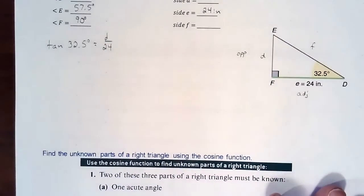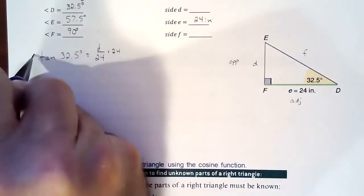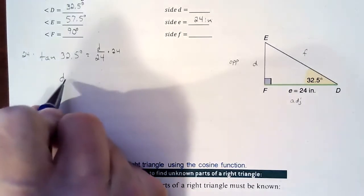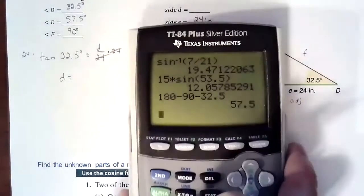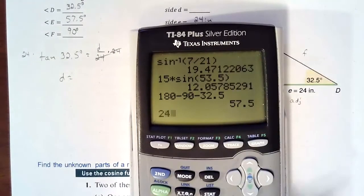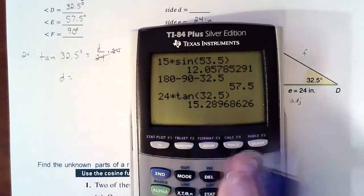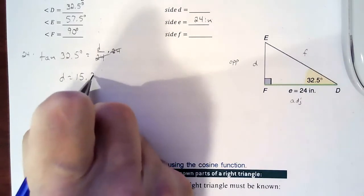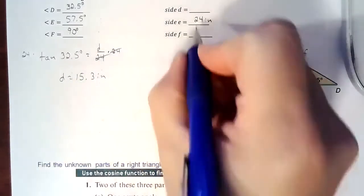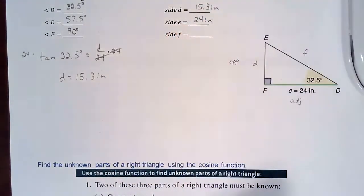And then I solve. So to solve that, I'm going to try to get the D by itself. I'm going to multiply by 24 on both sides. So D is going to equal whatever that turns out to be. So multiply that 24 times tangent of 32.5. So we'll round that to the nearest tenth. So we're looking at 15.3 is what D would equal. 15.3 inches.